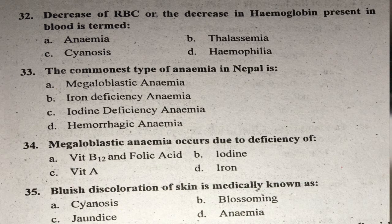Question thirty-two: Decrease of RBC or decrease in hemoglobin present in blood is termed as what? The condition is called anemia. Right answer is A.